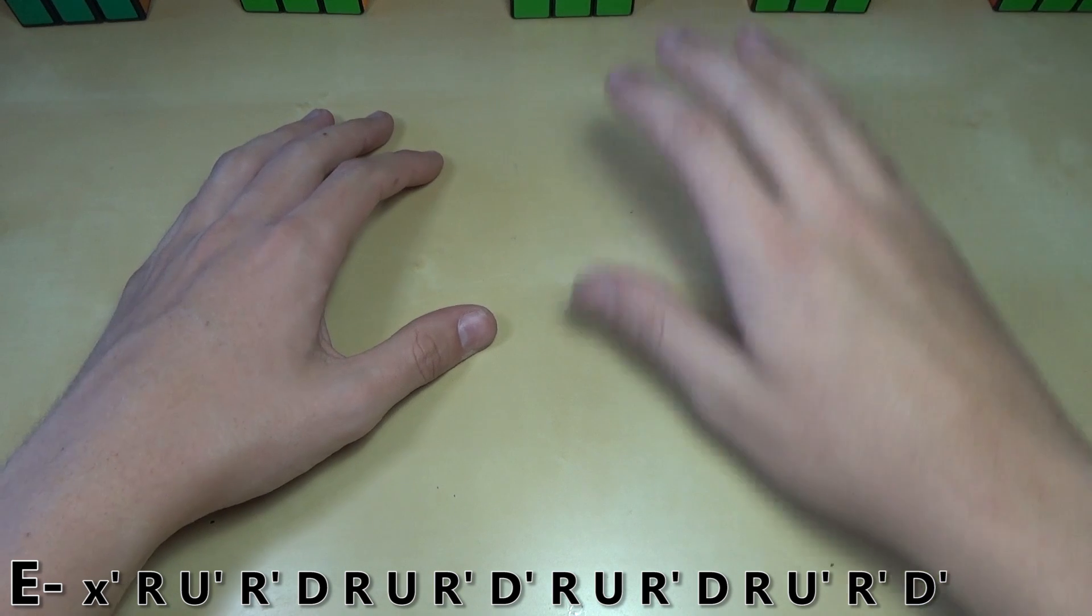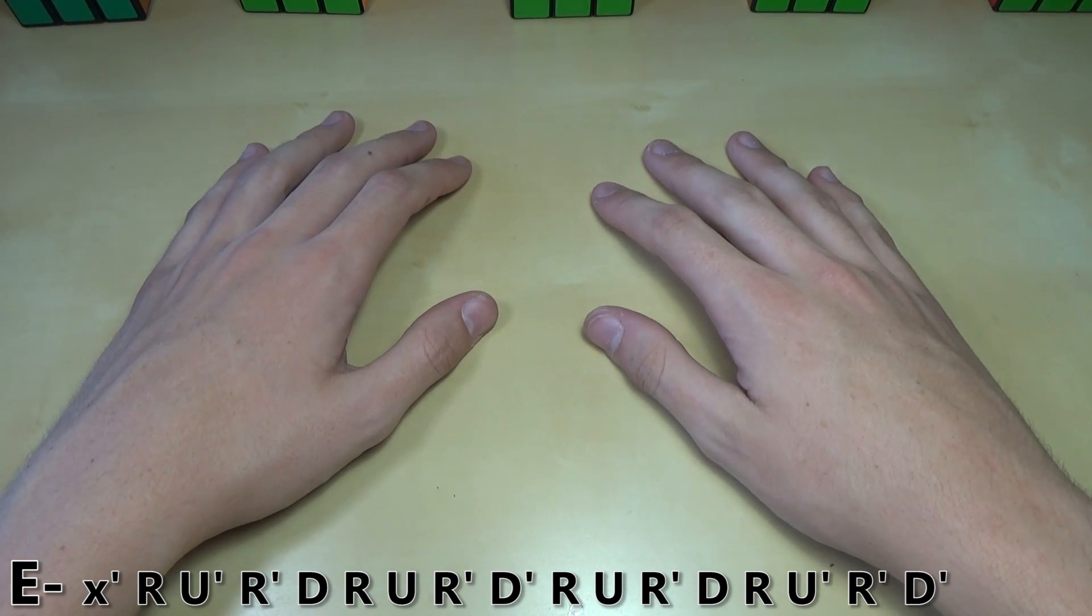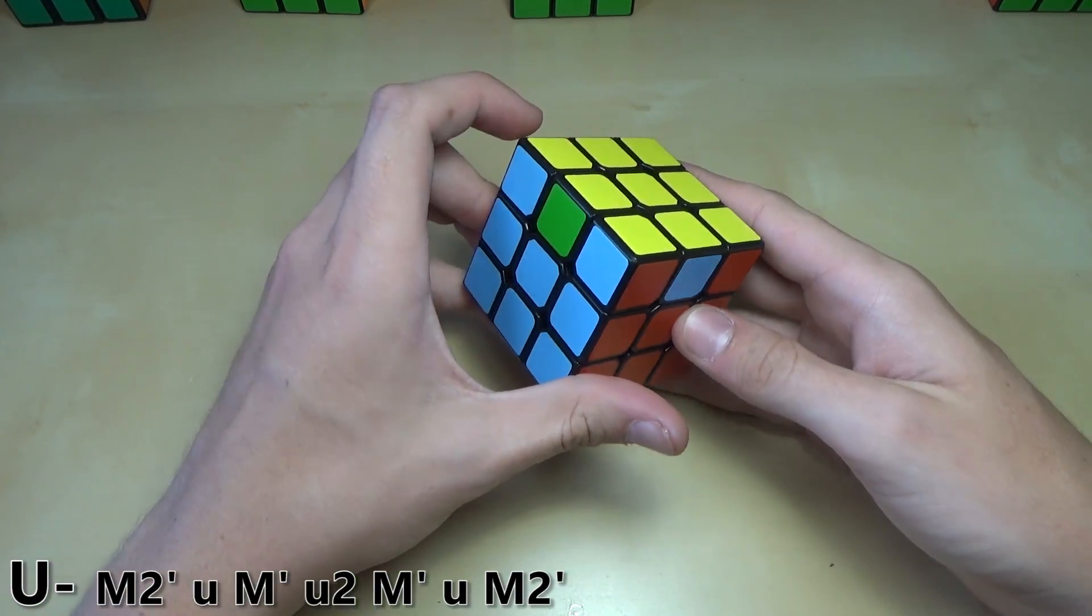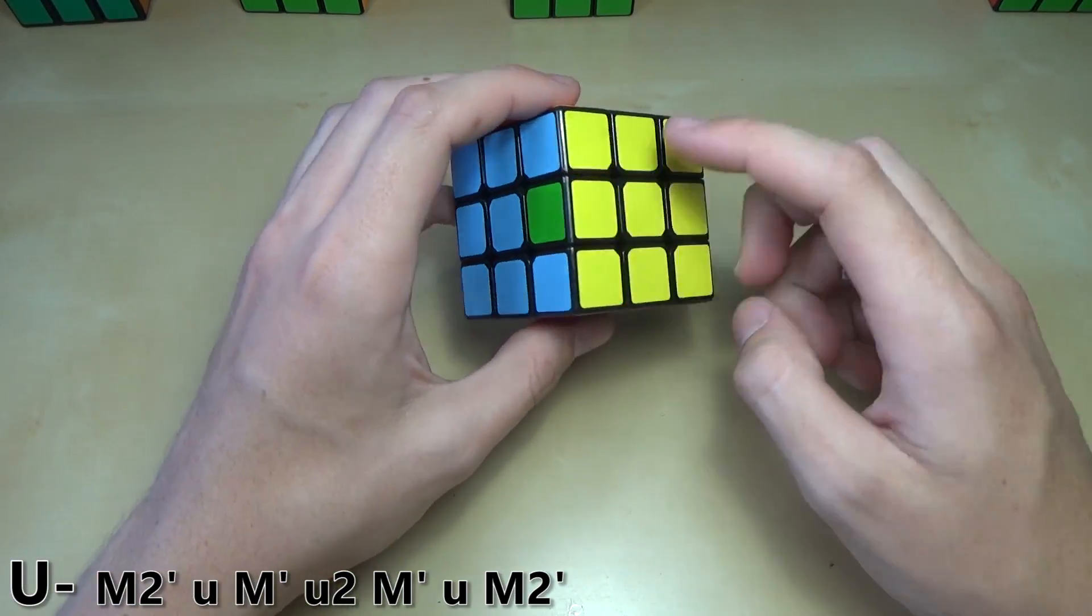That was the E-perm. Next up is one that is a very simple algorithm. Most people already know how to do this one too. This is a part of TULIC PLL. It is the U-perm, the U-B-perm in particular.